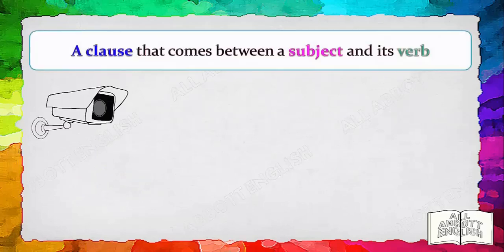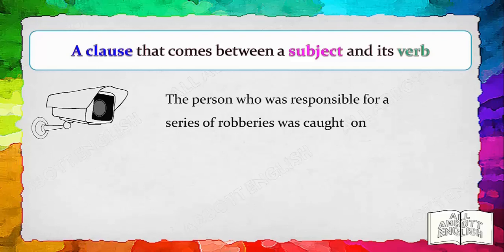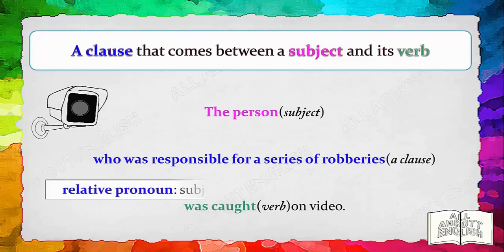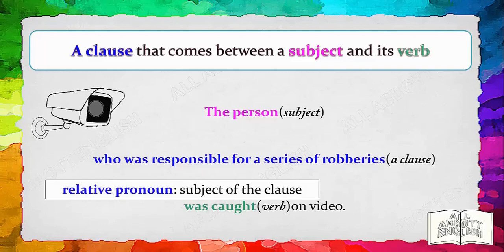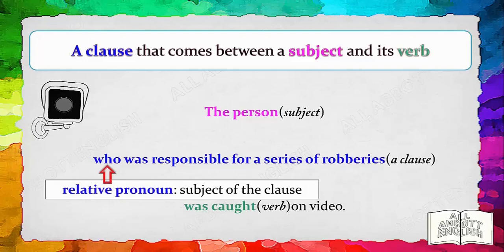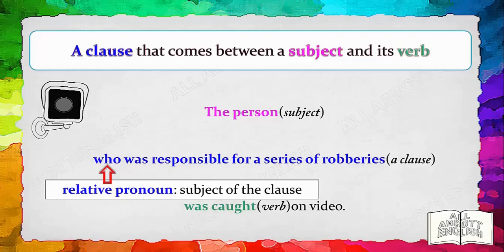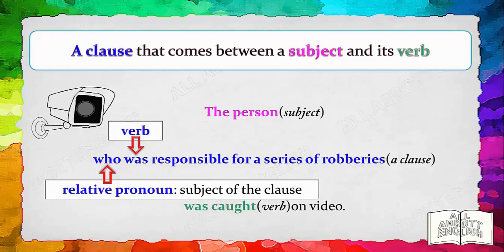Let's look at an example of a clause that comes between a subject and its verb. 'The person who was responsible for a series of robberies was caught on video.' 'Who is responsible for a series of robberies' is a clause. It begins with a relative pronoun 'who,' which is also the subject of the clause. Other relative pronouns are: that, who, whose, whom. It also has a verb and other elements.